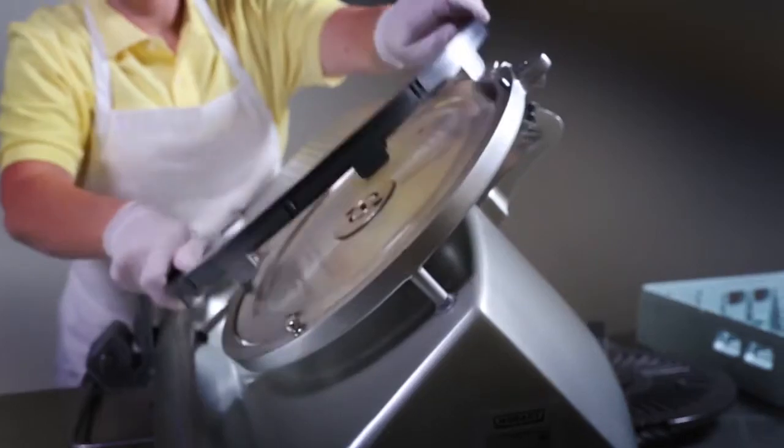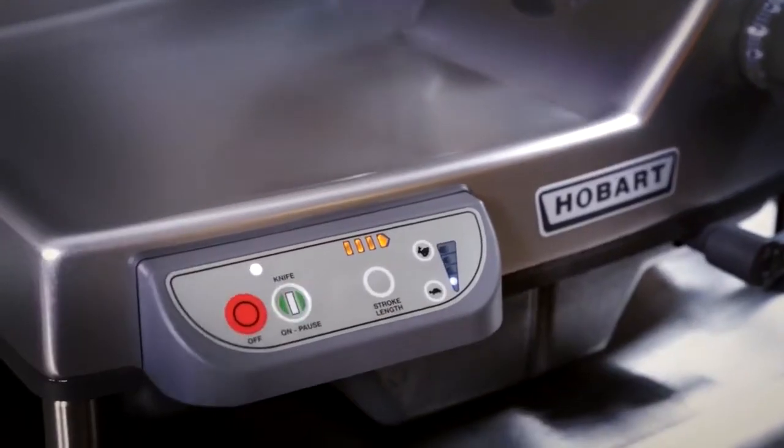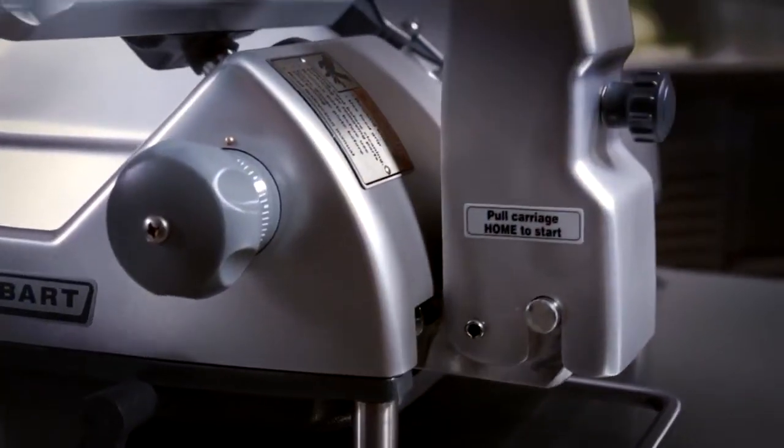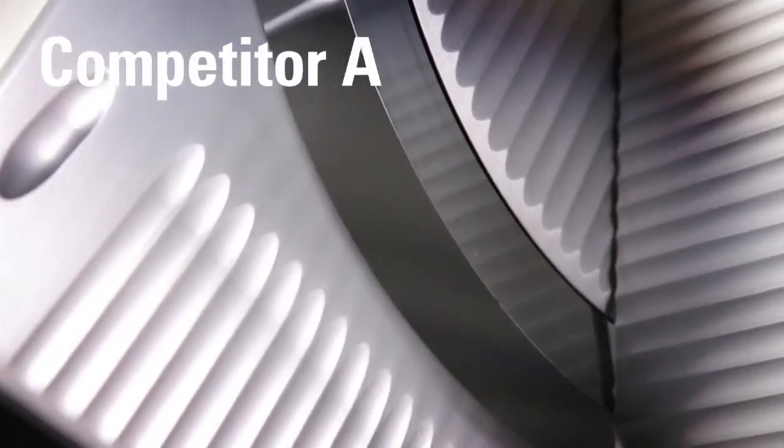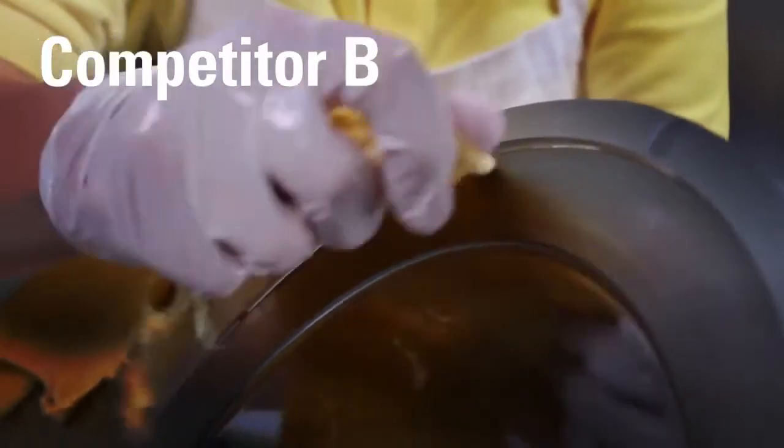And only the HS9 protects operators with zero knife exposure, automatic shut-off, and home start features. The competitors simply don't have them, exposing your operators to unnecessary risks, especially when they're cleaning.